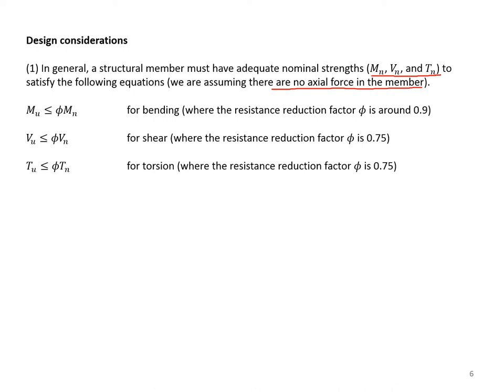In these equations, on the left side you will see, for example, M sub u, which is the applied load action such as bending moment. On the right side, you see phi times M sub n. Phi is a resistance reduction factor and M sub n is the nominal bending resistance. The resistance reduction factor for bending is usually around 0.9 or less, and for shear and torsion it is equal to 0.75.